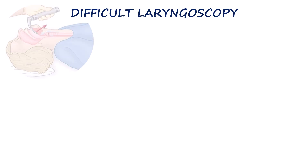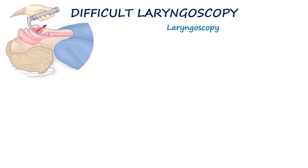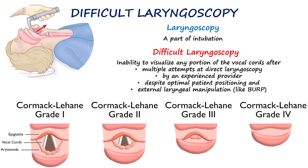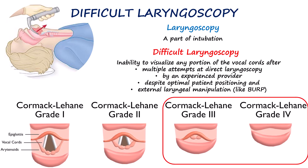Laryngoscopy precedes intubation, and an easy laryngoscopy is essential for safe and effective intubation. Difficult laryngoscopy is generally defined as the inability to visualize any portion of the vocal cords after multiple attempts at direct laryngoscopy by an experienced provider, despite optimal patient positioning and external laryngeal manipulation. In practice, it typically corresponds to Cormack-Lehane grade 3 or 4, where only the epiglottis or no glottic structures are visible, despite optimal efforts.